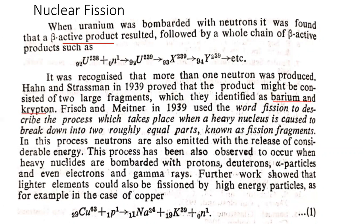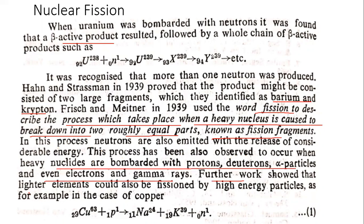Meitner and Frisch in 1939 used the word fission to describe the process which takes place when a heavy nucleus is caused to break down into two roughly equal parts known as fission fragments. In this process, neutrons are also emitted with the release of considerable energy. This process has also been observed to occur when heavy nuclei are bombarded with protons, deuterons, alpha particles, or even electrons and gamma rays. Further work showed that lighter elements could also be fissioned by high energy particles.